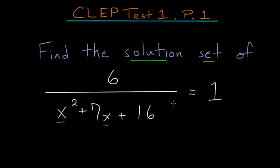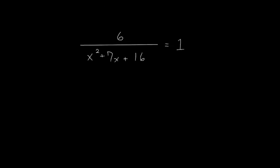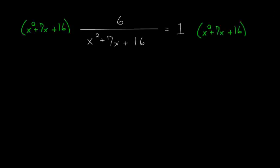One of the most effective ways to solve this is to just multiply each side of the equation by this entire denominator. That way, the x's will be in the numerator. So to do this, I'll scroll down so we have a little bit more space to work with. So we'll multiply each side by this x squared plus 7x plus 16.